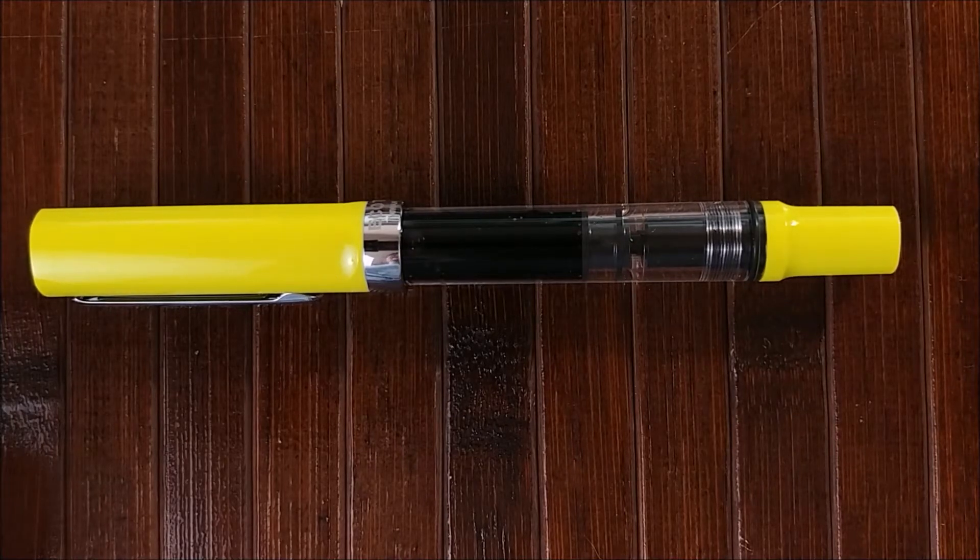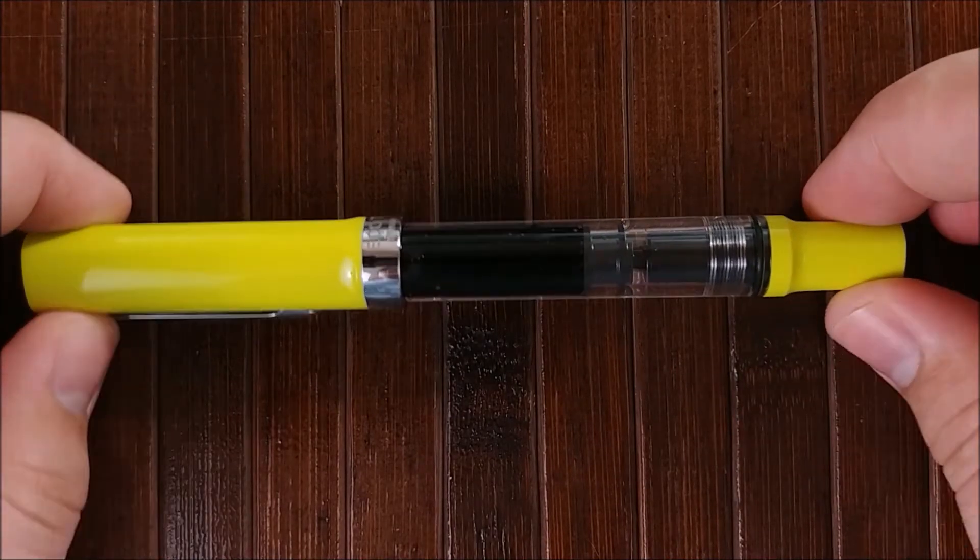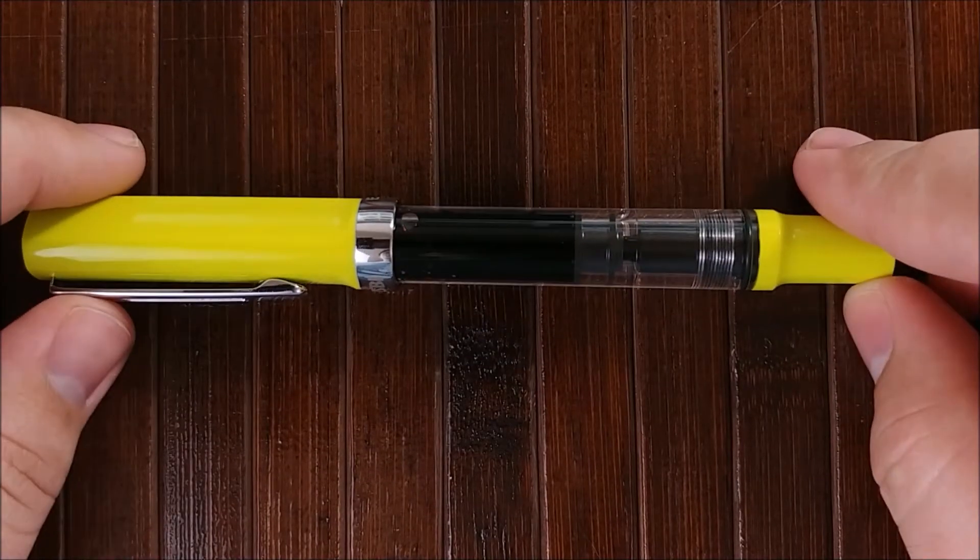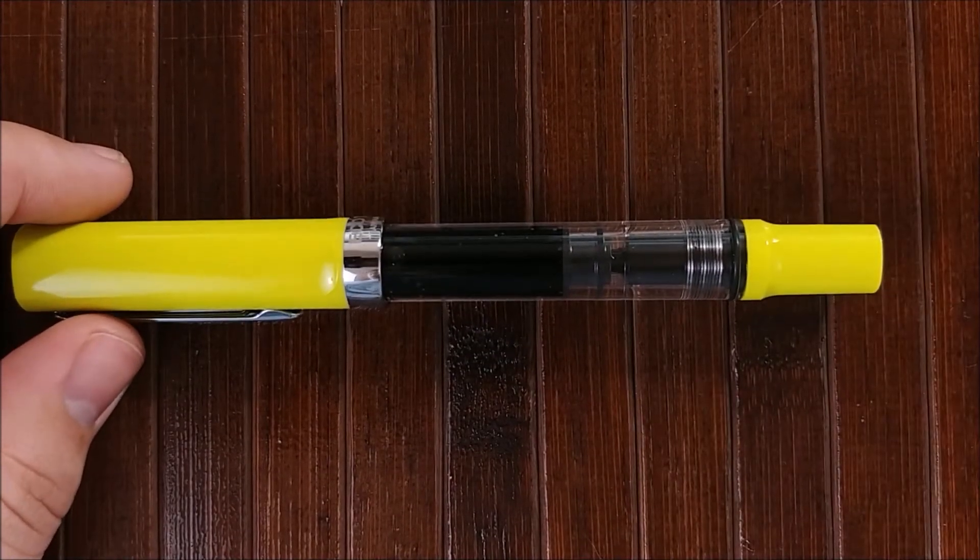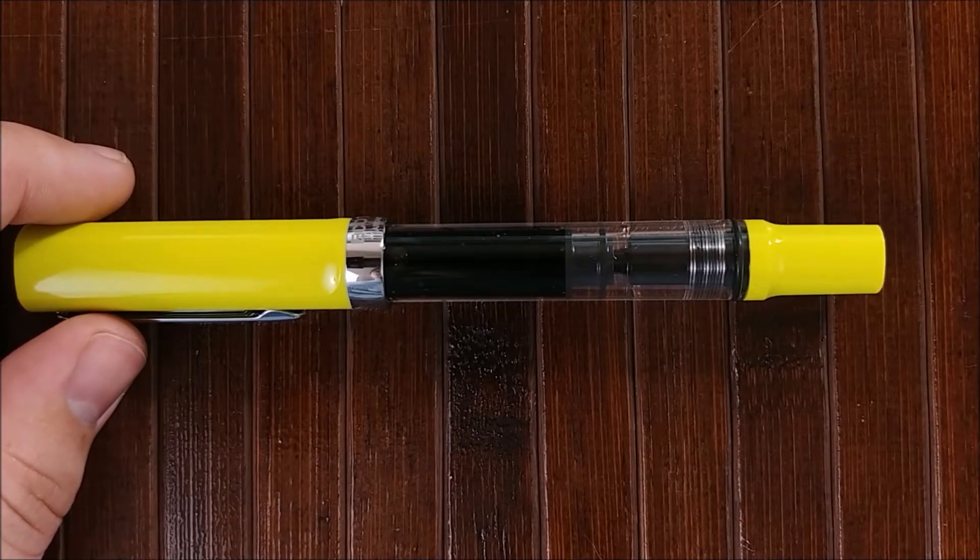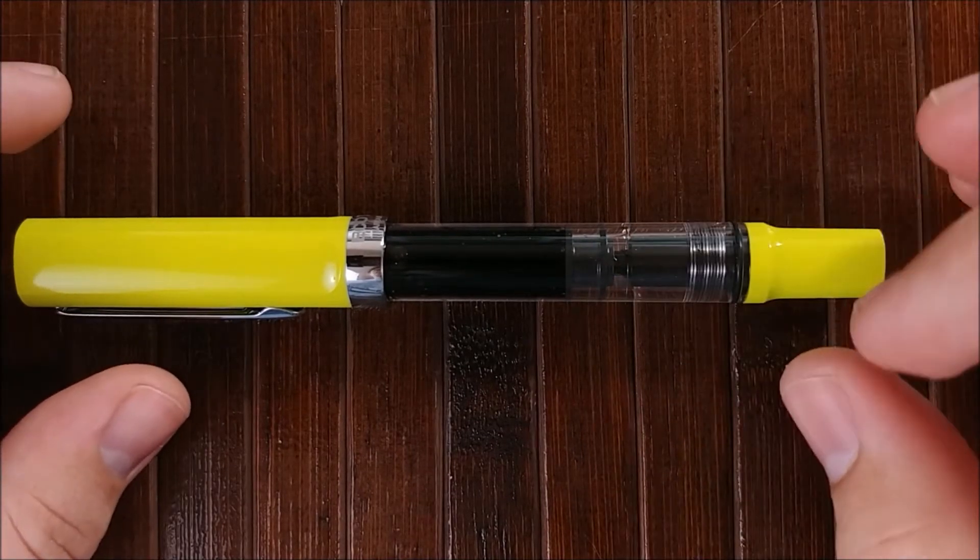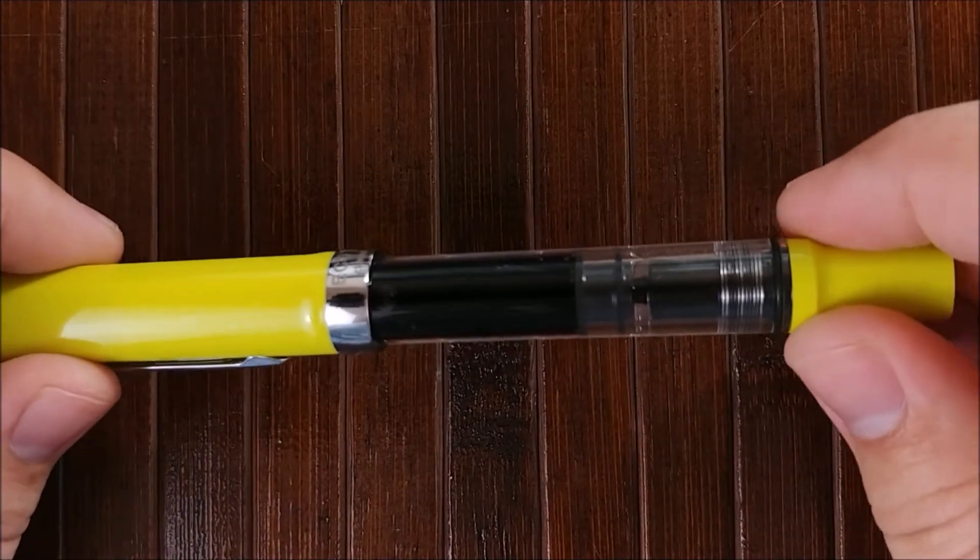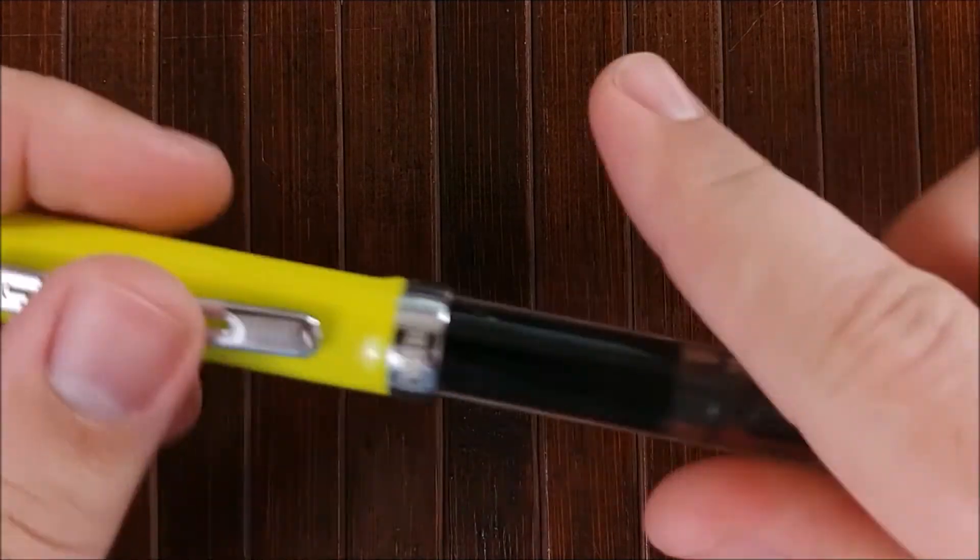Hey everybody, Jake here, and today we're going to take a look at the TWSBI ECO T. This is the yellow-green version. It's a little bit more yellow than the actual lime-green TWSBI ECO, and the only difference between the regular TWSBI ECO and the ECO T is the triangular grip, cap, and piston knob.